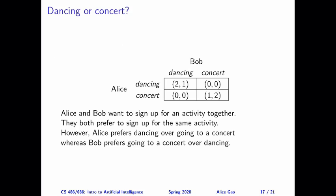This game is another well-known normal form game in game theory. It used to be called the Battle of Sexes, but I really don't like that name. The name comes from the fact that we have two players who would prefer to sign up for an activity together, except they each prefer one activity more than the other. Alice prefers dancing more over going to a concert, where Bob prefers going to a concert more than dancing.